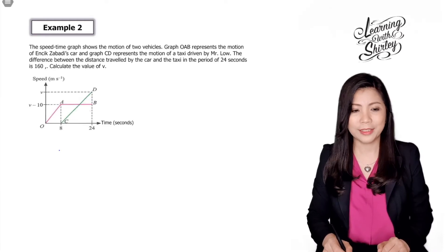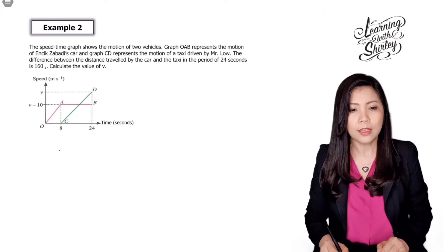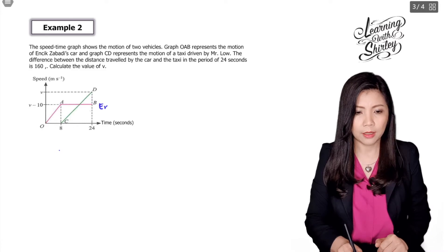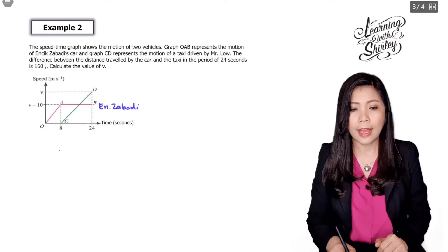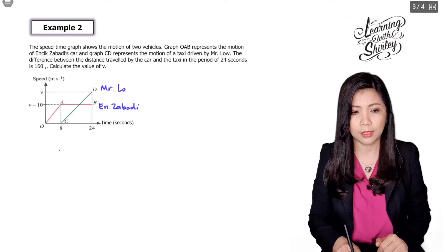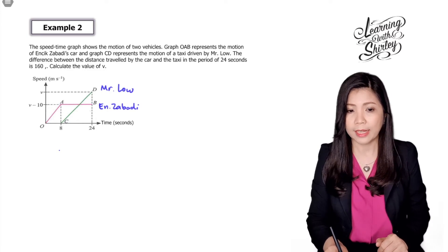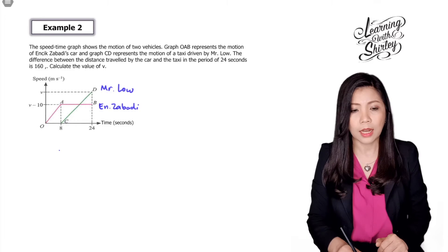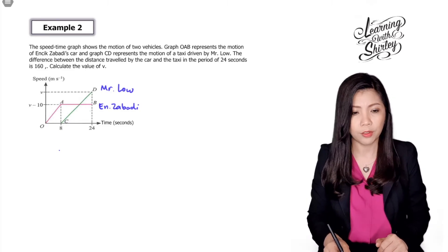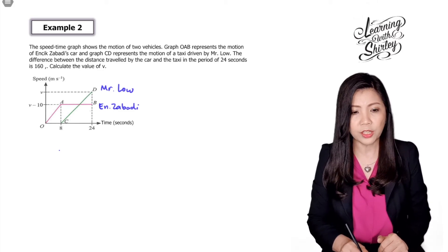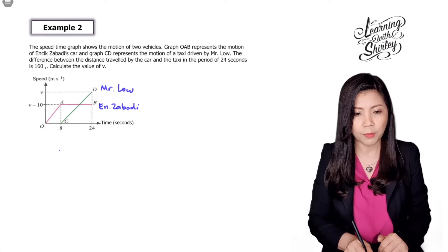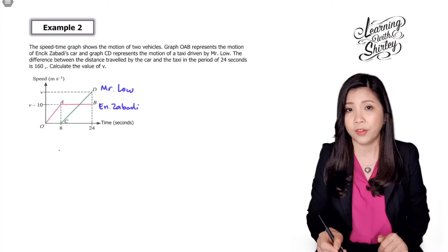Let's look at question number two. The speed-time graph shows the motion of two vehicles. Graph OAB represents the motion of Injit Zabadi's car, and graph CD represents the motion of a taxi driven by Mr. Lau. The difference between the distances traveled by the car and the taxi in a period of 24 seconds is 160. We use the trapezium minus the triangle equals 160.